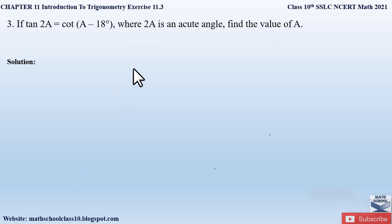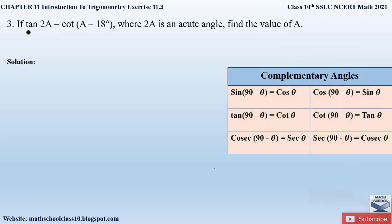A similar kind of problem we have solved in the example problems related to this exercise 11.3. Here you can notice that we cannot apply the trigonometric ratio table, therefore we are going to use complementary angles, which we have studied. So what is given here — let us write down: tan 2A is equal to cot (A minus 18 degrees). We are going to find the complementary angle of either tan 2A or cot (A minus 18).